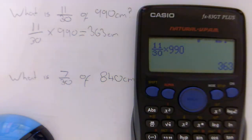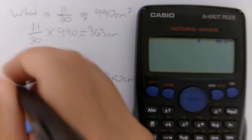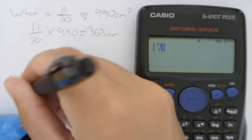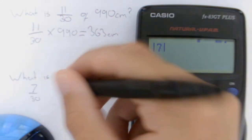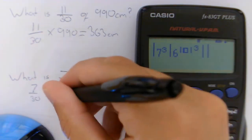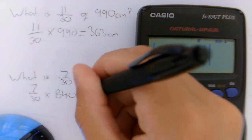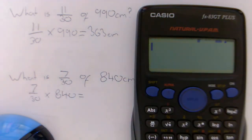Our next question we're asked what is 7 thirtieths of 840 centimetres. So again we've got to do the same sort of thing. We've got to do 7 thirtieths times by 840. So we need to type this into our calculator.